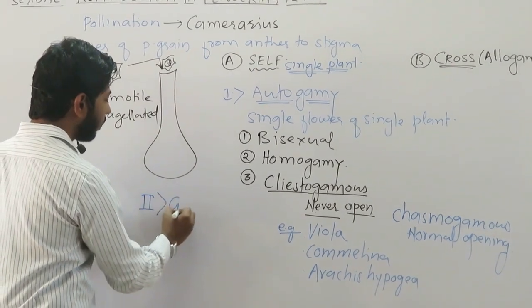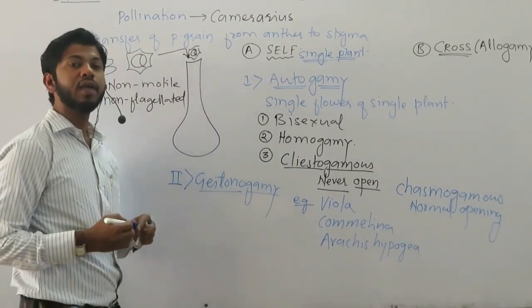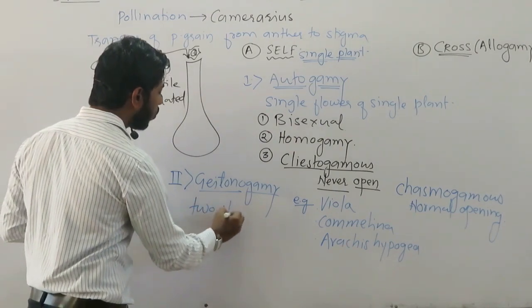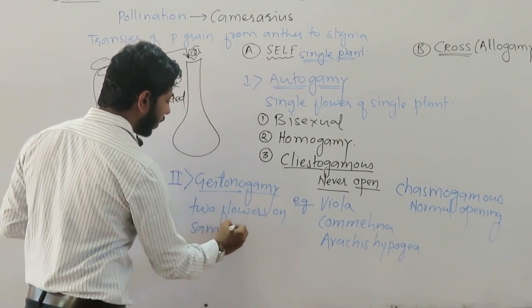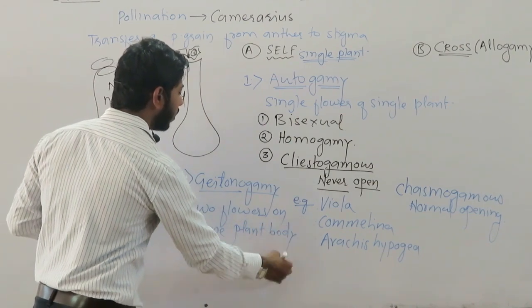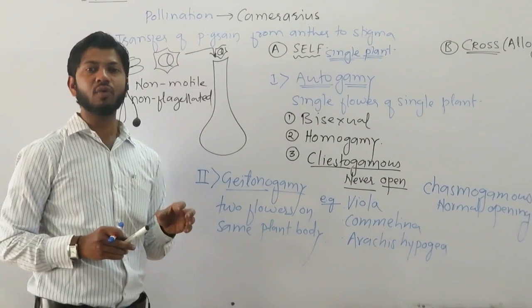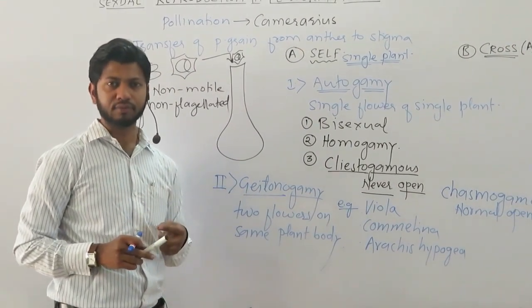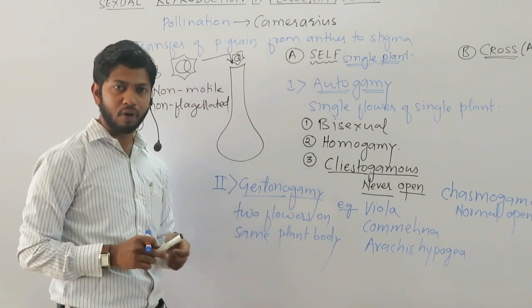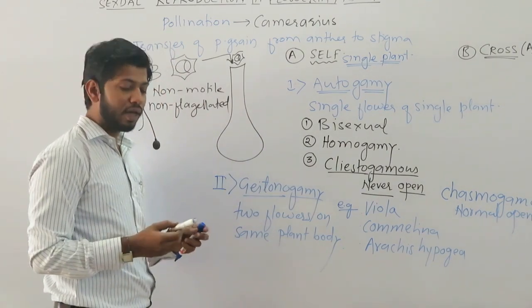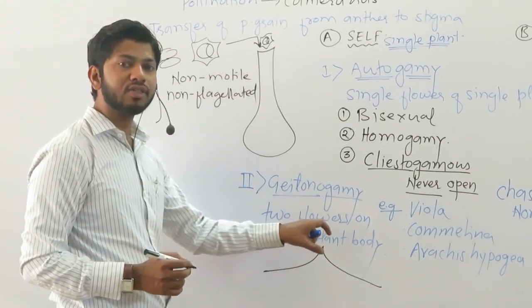After autogamy, the next type of pollination included in self-pollination is known as geitonogamy. In geitonogamy, pollination occurs between two different flowers born on the same plant body. However, in geitonogamy a pollinating agent is required. Since a pollinating agent is required, the pollination mechanism resembles cross-type pollination, but since it takes place on a single plant body, it is included in self-type pollination. So geitonogamy is partially cross-pollination and partially self-pollination.